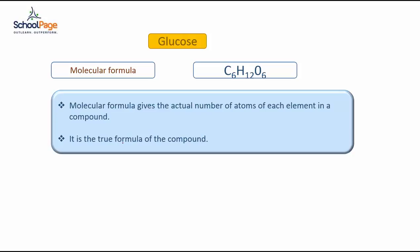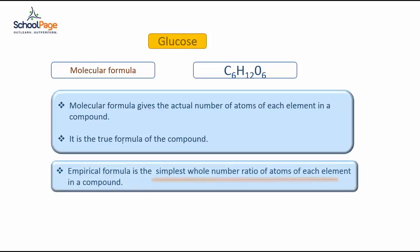An empirical formula is derived from the molecular formula and gives the simplest whole number ratio of the atoms of each element in that compound. Let us understand this by deriving the empirical formula of glucose.